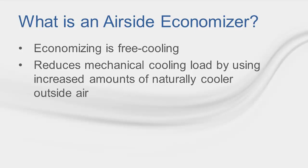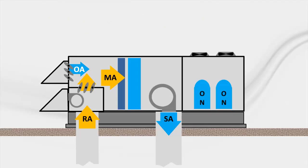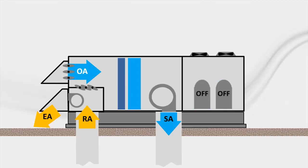Many times, the outdoor air dampers will be modulated in order to mix with the return air to deliver the proper temperature to a space. This could also mean that, if the conditions warrant, the amount of ventilation air could be 100%. However, if the outdoor air conditions do not allow for free cooling to be advantageous, the economizer cycle will be disabled and only mechanical cooling will be used to condition the space. Typical operation includes the use of mechanical cooling while bringing in minimum outside air quantities, but when the conditions are right, this outdoor air damper opens further to bring in more outdoor air, reducing the need to operate compressors to provide cooling.